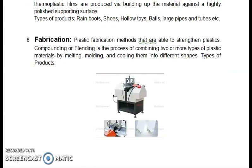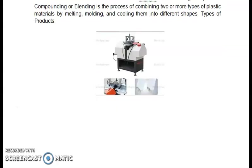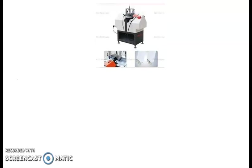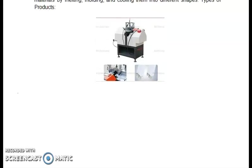The next one is fabrication. Plastic fabrication methods are able to strengthen plastic. Compounding or blending is the process of combining two or more types of plastic materials by melting, molding, and cooling them into different shapes. These are the products made by the fabrication process.